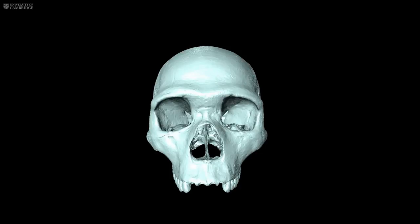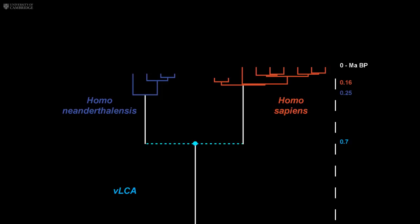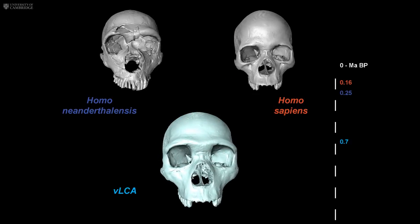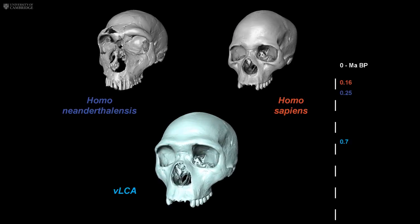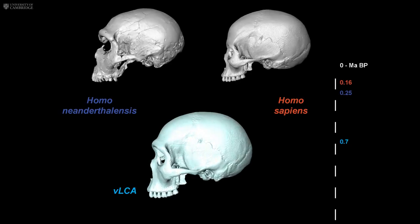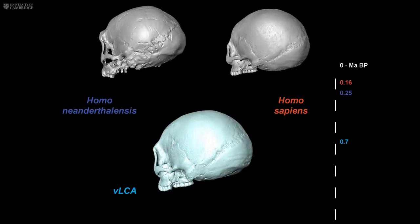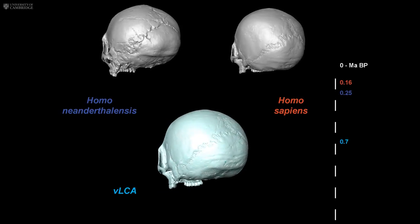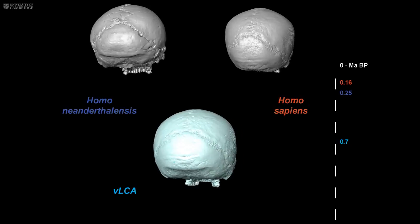This last common ancestor was probably part of the species Homo heidelbergensis — the species of Homo that lived in Africa, Europe, and Western Asia between 700,000 and 300,000 years ago. We used the 3D morphology of early Homo species and, especially, of modern humans and Neanderthals to predict the skull morphology of the last common ancestor.